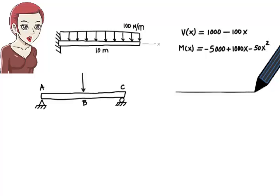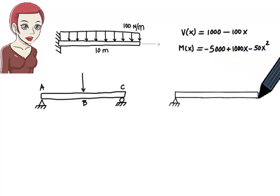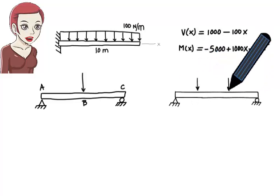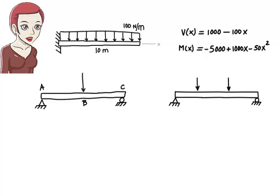Here, three pairs of equations are needed for representing shear and moment, since the concentrated loads divide the beam into three segments. The need for having multiple shear and moment equations also arises when the beam is partially subjected to distributed loads.